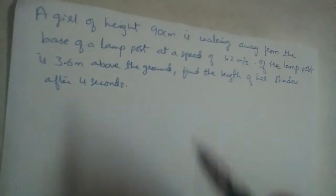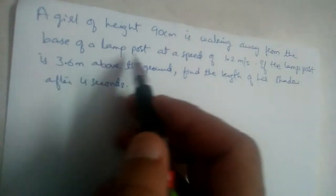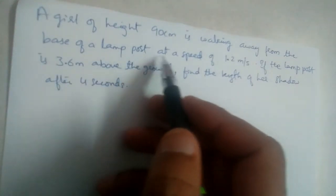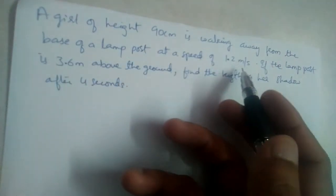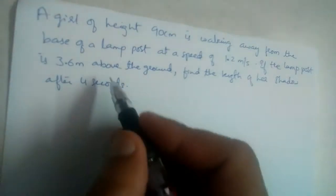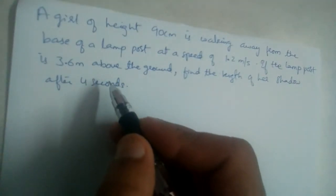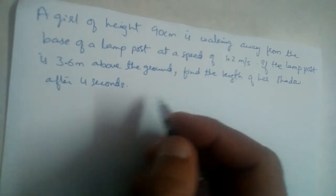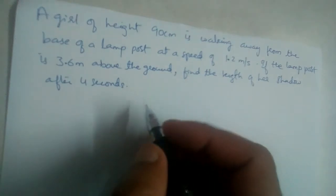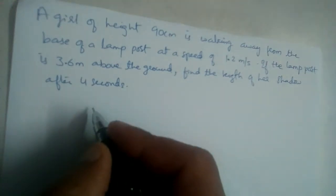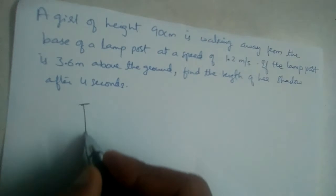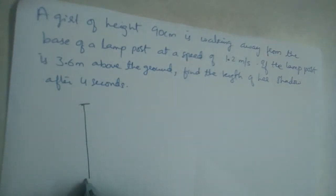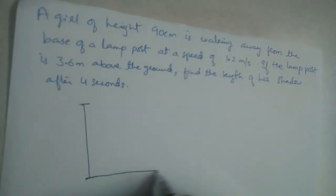A girl of height 90 centimeters is walking away from the base of a lamppost at a speed of 1.2 meters per second. If the lamppost is 3.6 meters above the ground, find the length of her shadow after 4 seconds. Let us draw the diagram — suppose this is the lamppost and this is the ground.